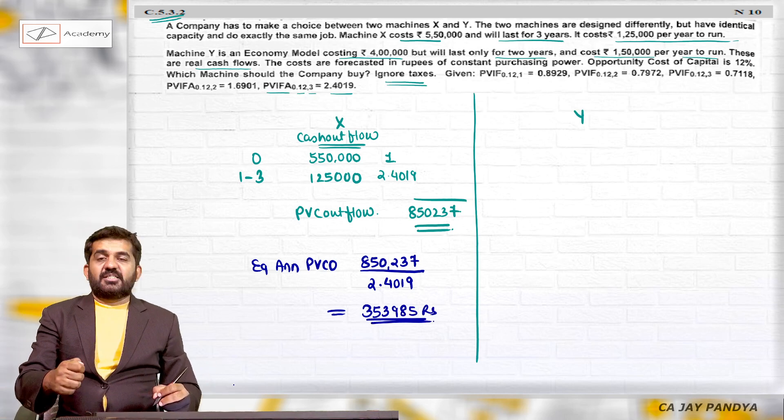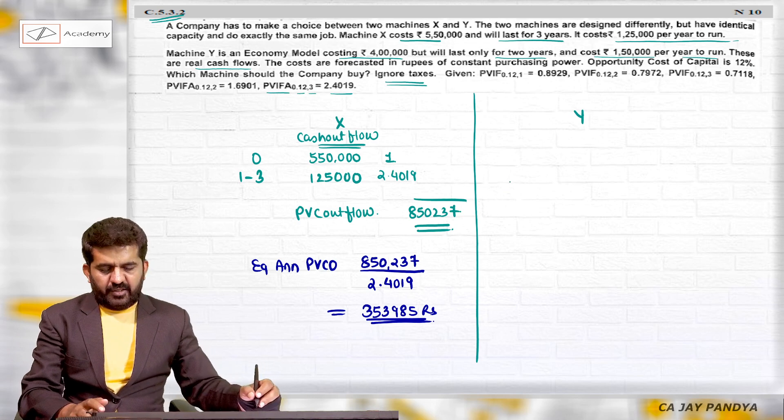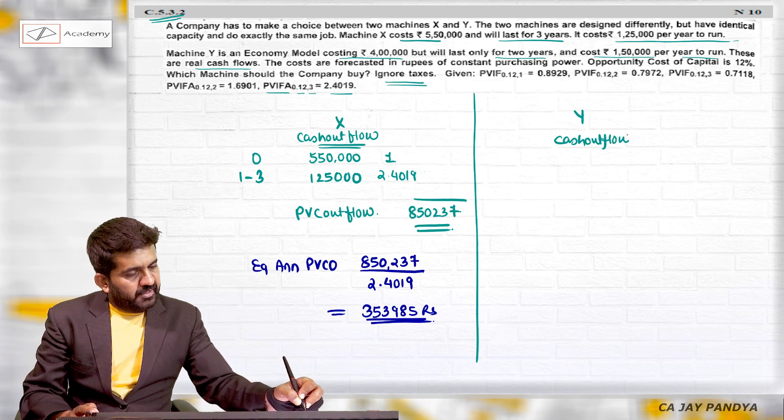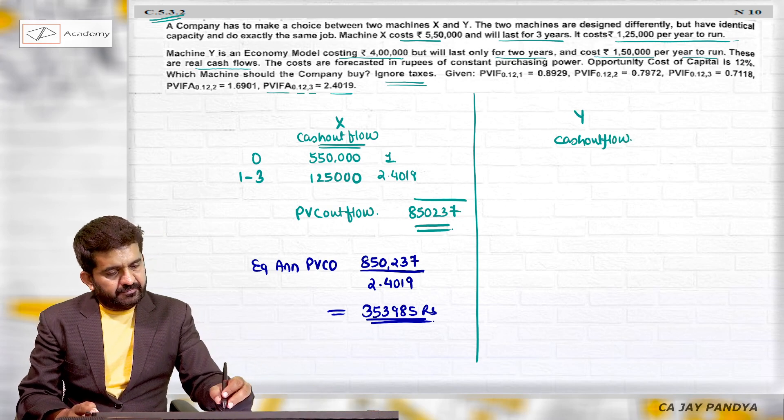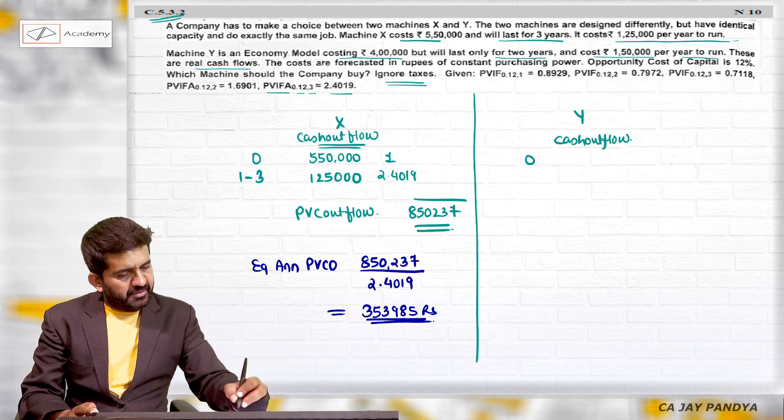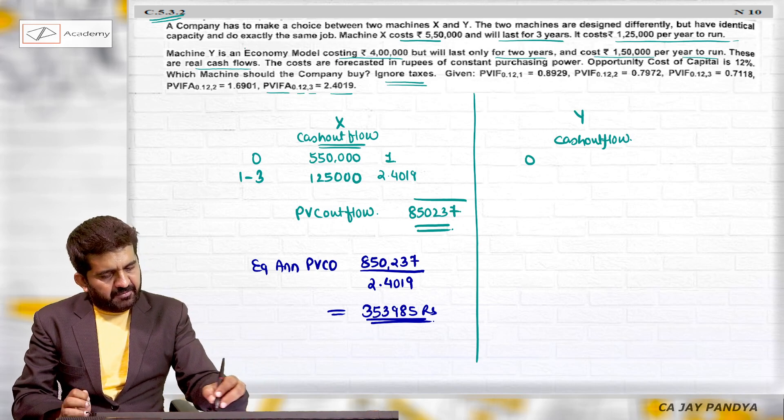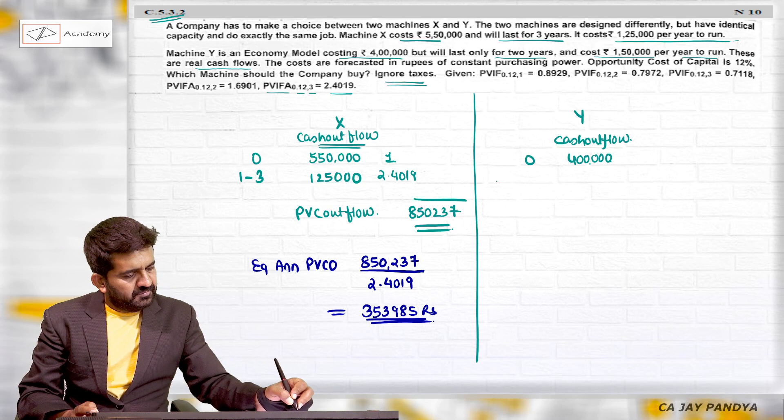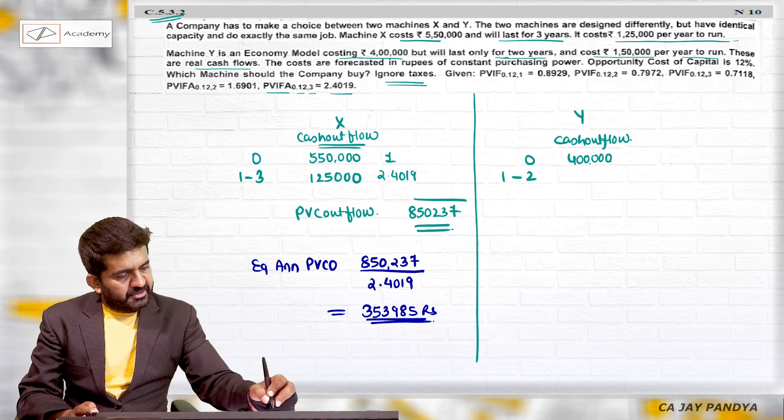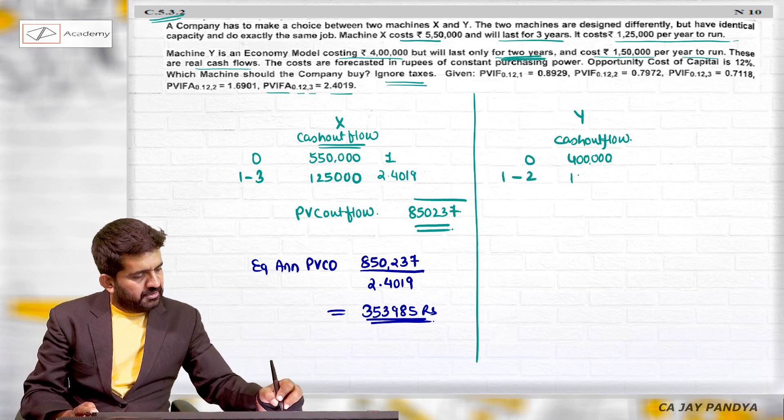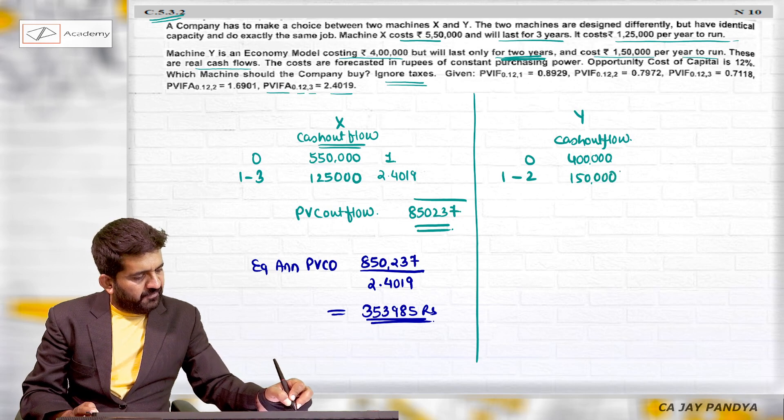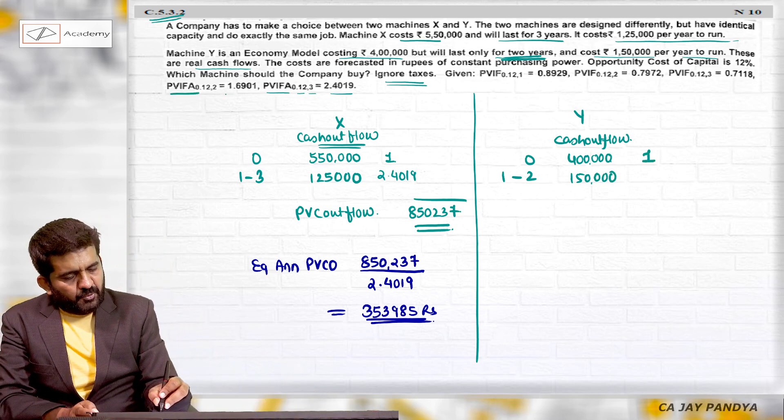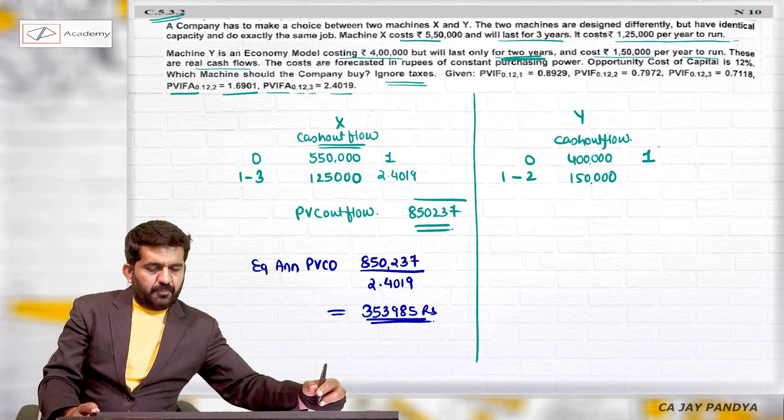This is the equalized annual present value of cash outflow. Let us go to Machine Y. What will be the cash outflow at the end of year zero? 4 lakh rupees. For 1 to 2 years, because it will last only for two years, the cost is 1,50,000. The present value annuity factor for two years is 1.6901.